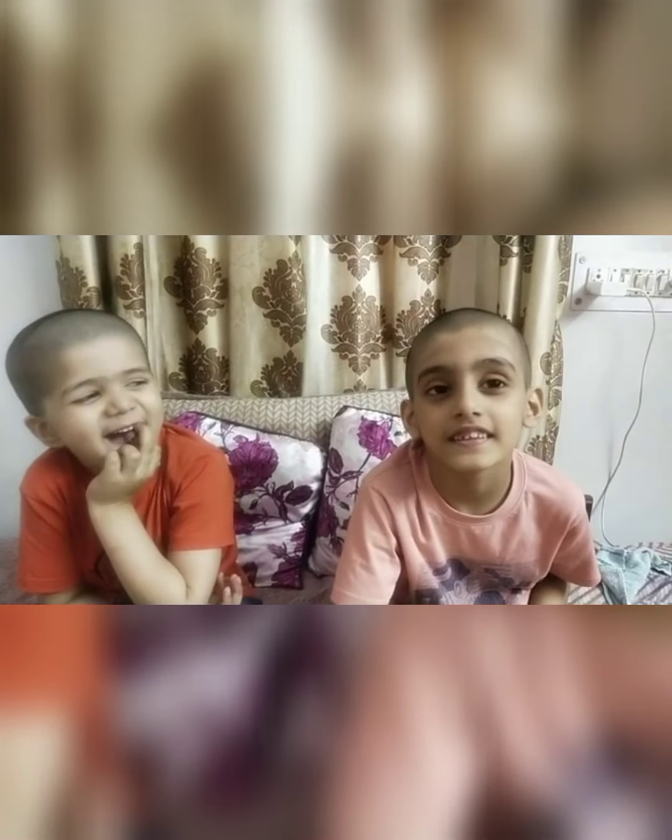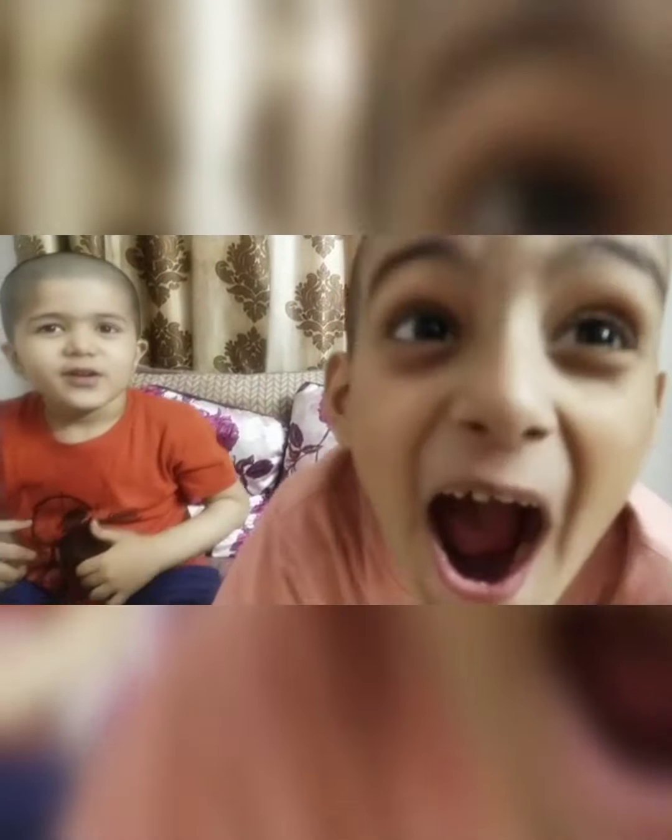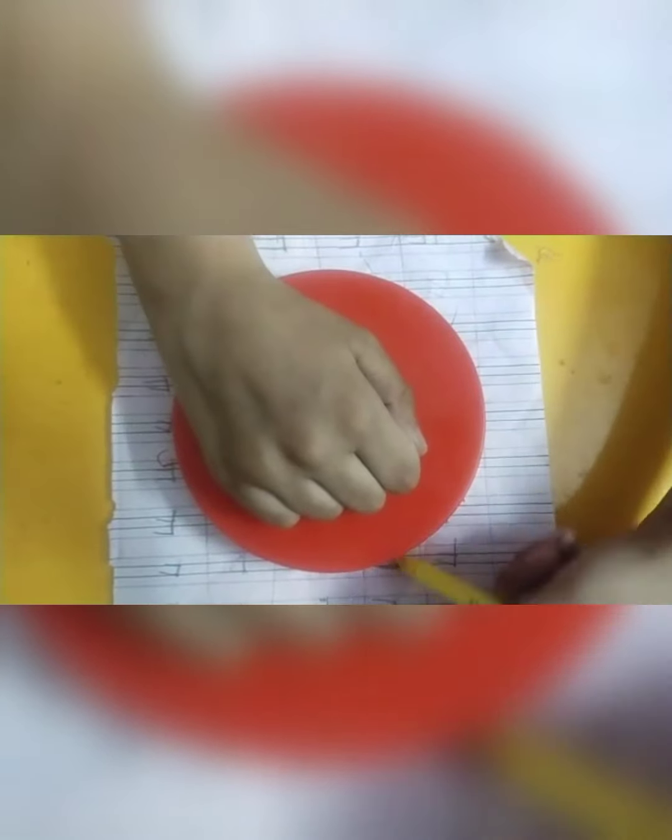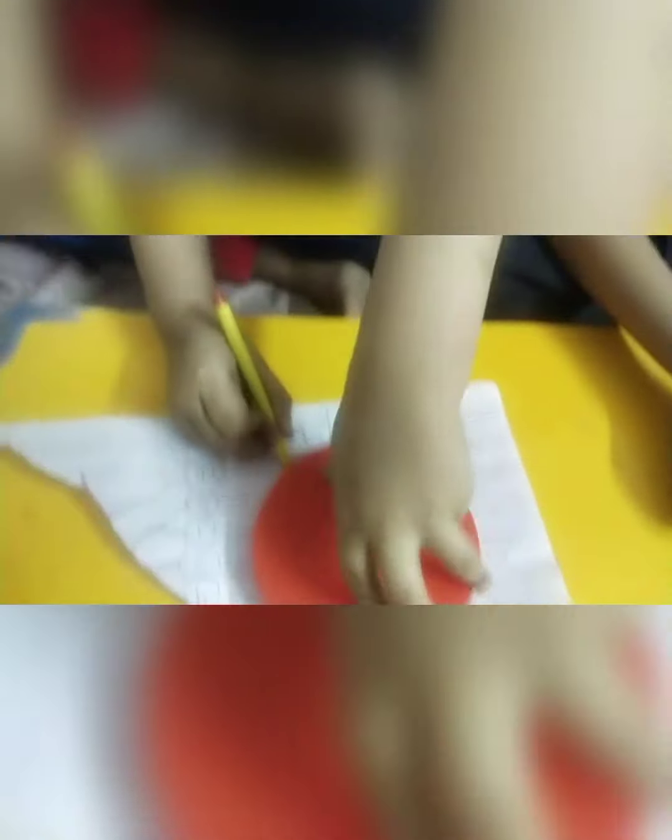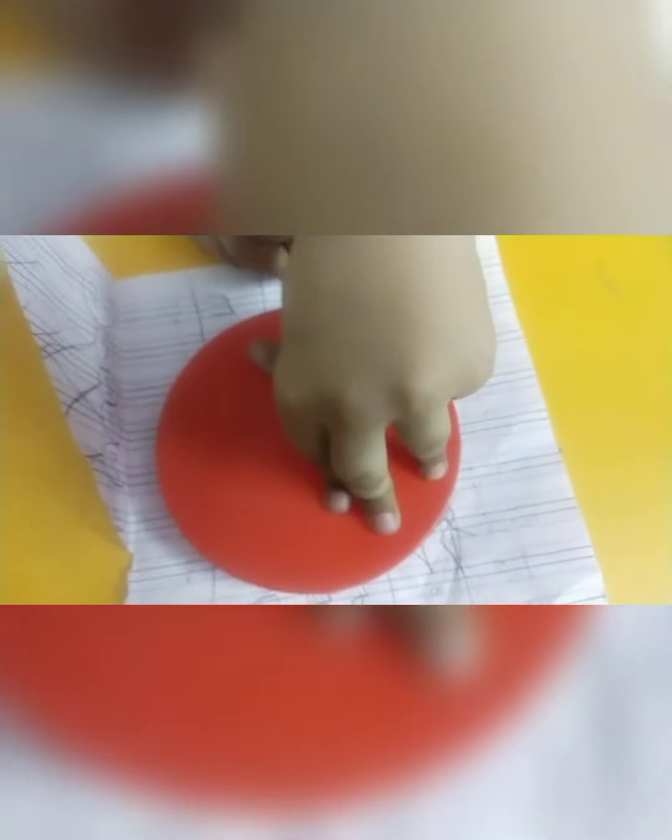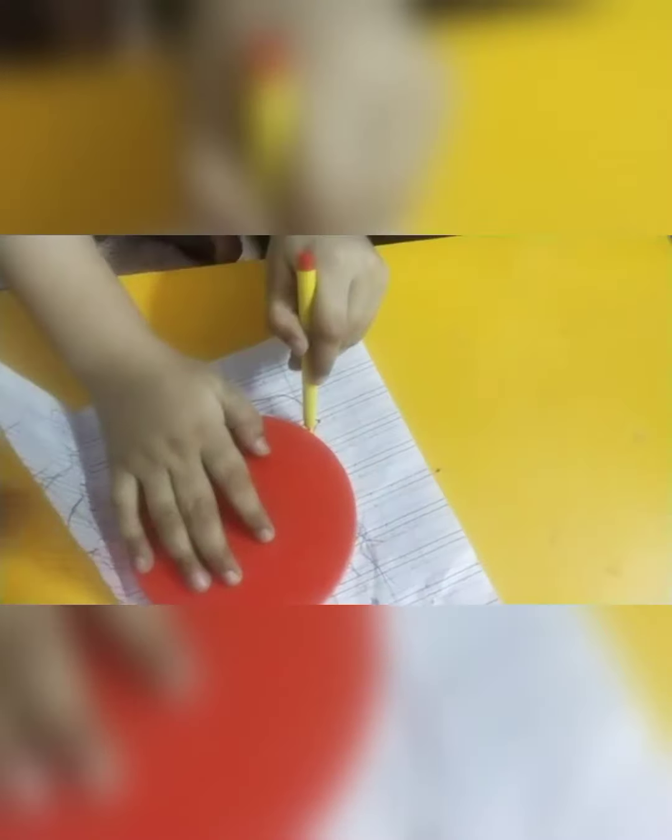We will put it on the pastel sheet. We will draw a round circle in this way. We will draw a round circle.